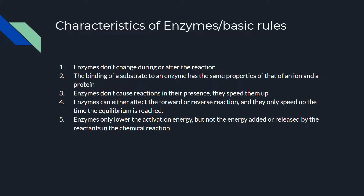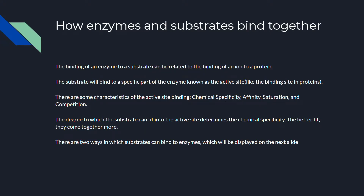Next, we'll look at how enzymes and substrates bind together. The binding of an enzyme to a substrate is related, as we said, to the binding of an ion and a protein. The substrate will bind to a specific part of the enzyme known as the active site, similar to the binding site in proteins. There are some characteristics of active site binding that we'll look at.